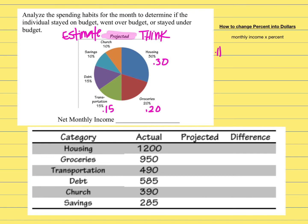For housing, the net monthly income was $3,900 times 0.30, which equals $1,170. Putting that in the chart, the projected amount was $1,170 but the actual amount spent was $1,200, so this person went over budget. Subtracting those gives a positive $30 — they went over budget by $30.